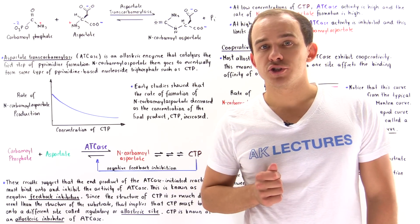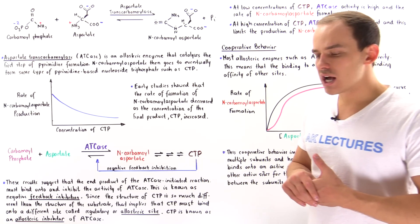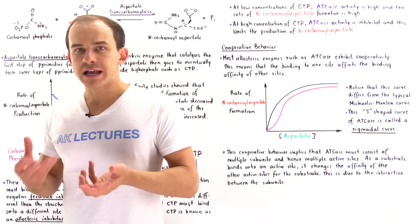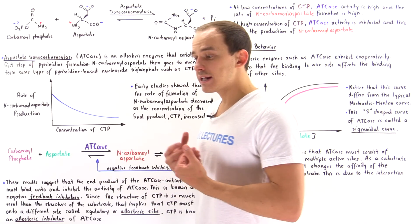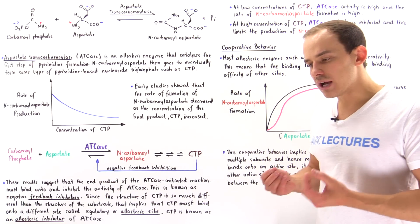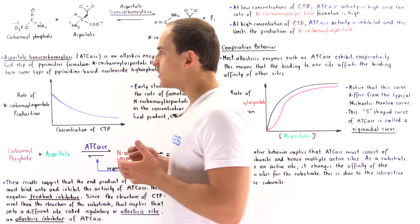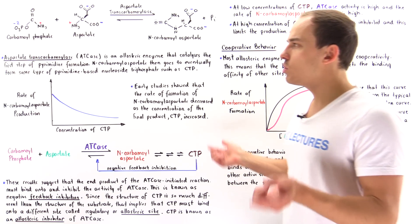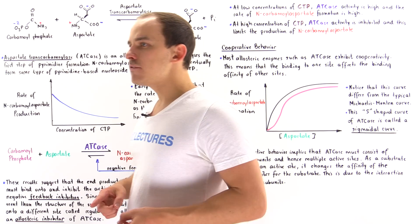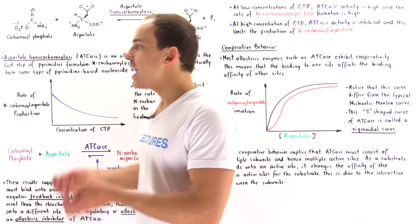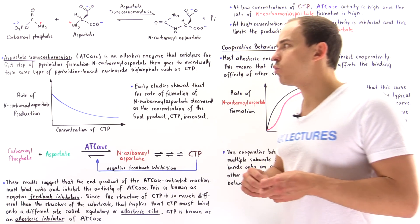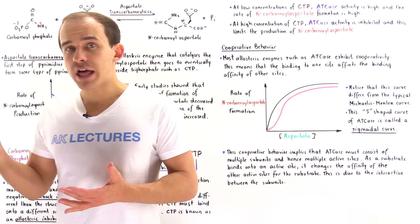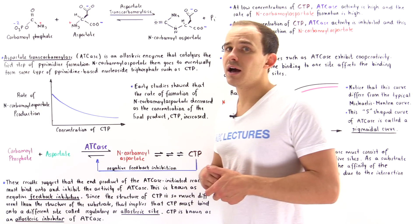The first enzyme regulation mechanism we're going to focus on is allosteric regulation. To demonstrate how this works inside our cells, let's take a look at a specific type of allosteric enzyme known as aspartate transcarbamoylase. In this lecture and the next several lectures, we're going to focus on how this enzyme works and how it is regulated, beginning with the reaction that this enzyme actually catalyzes.